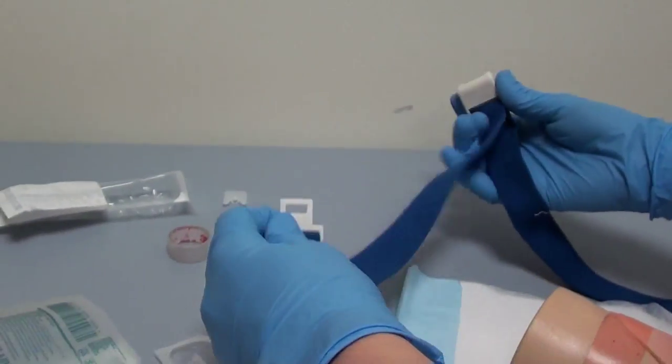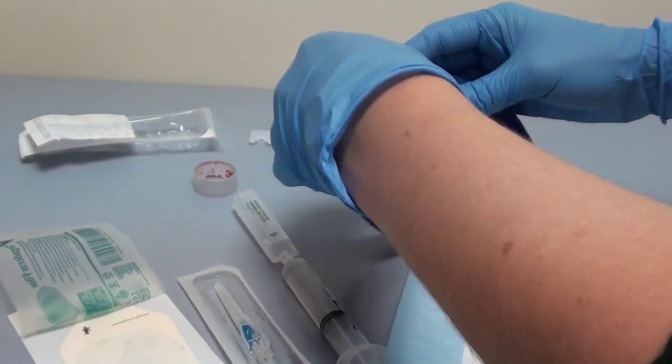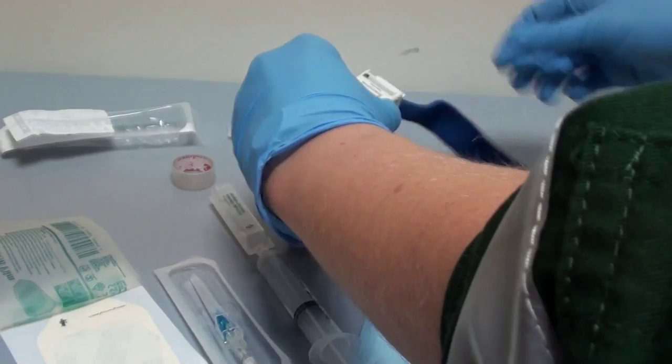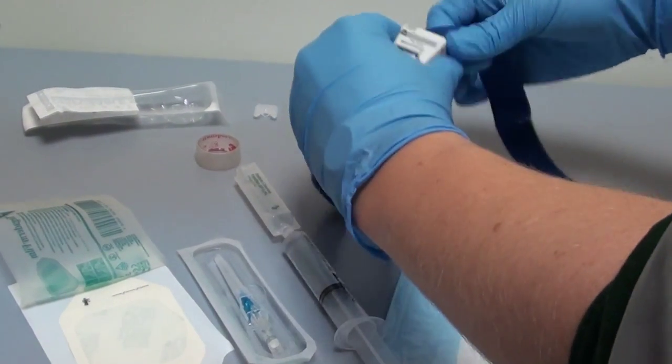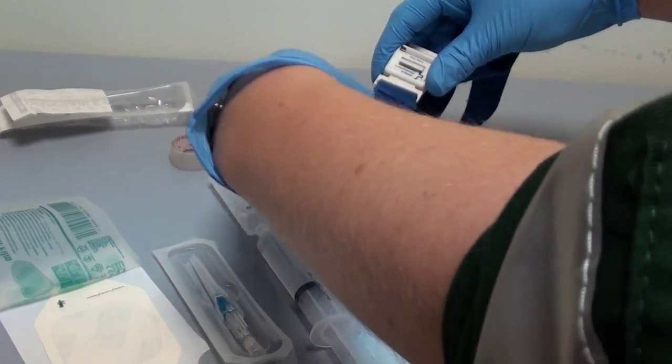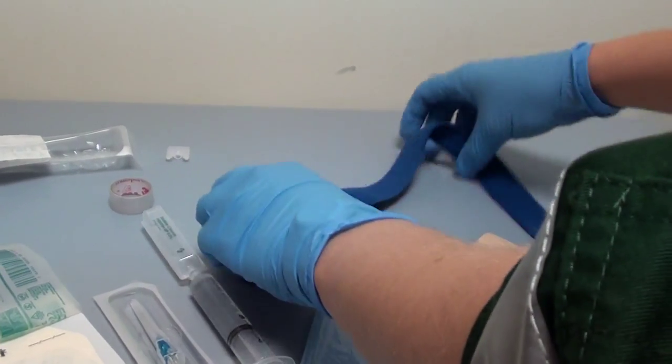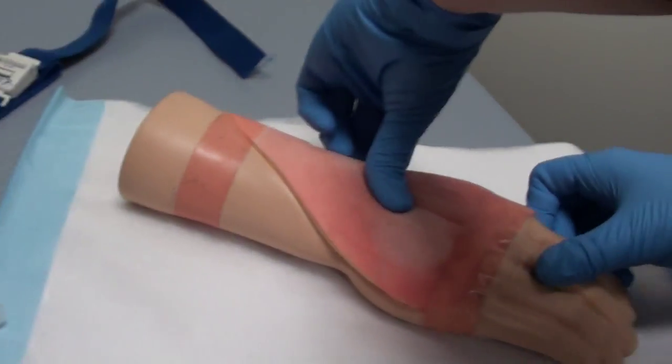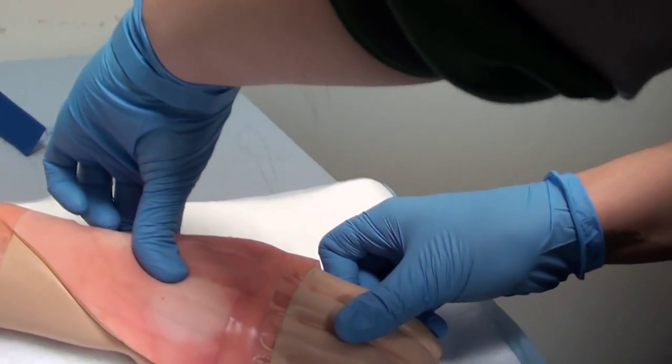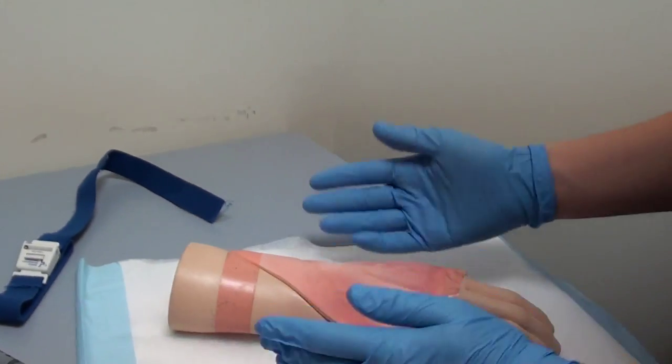Is it alright if I pop this tourniquet on? Just put that on further up the arm, assuming the arm extends up here. I'll just tighten it so that a couple of fingers can just go under. So that's done up there. Just going to feel a weak radial pulse there.